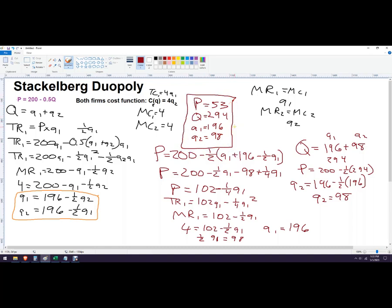If we wanted to know profit, we could take quantity times price for firm one, and then subtract that by marginal cost times quantity, or just plug in 196 into the cost function, find the difference. And that's firm one's profit. Firm two's profit is the same thing. So we take 98 and we multiply it by 53. That's our total revenue. And then take 98 times four. That's our total cost. Find the difference there. And that's how they get it.